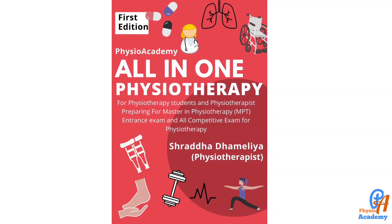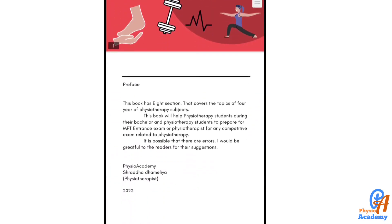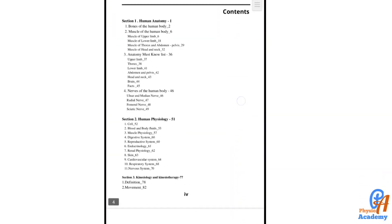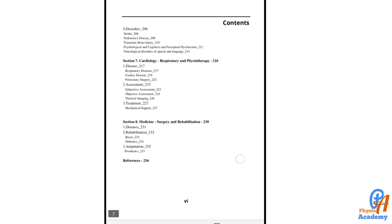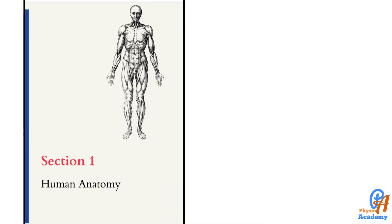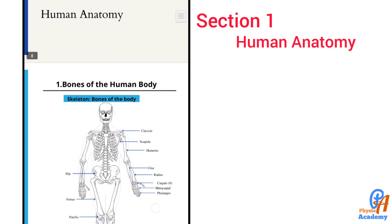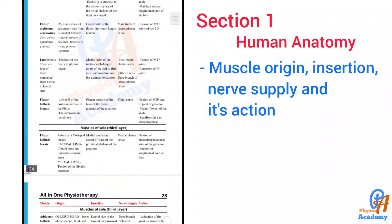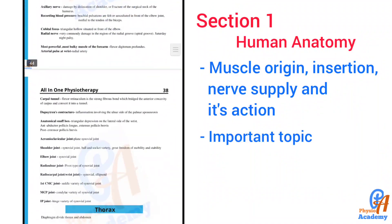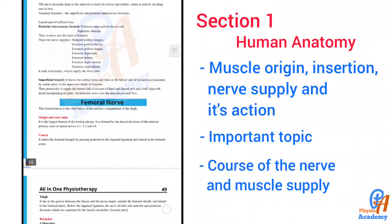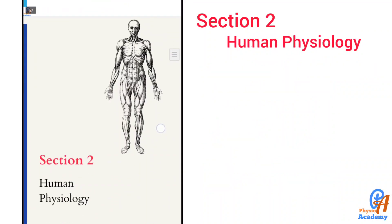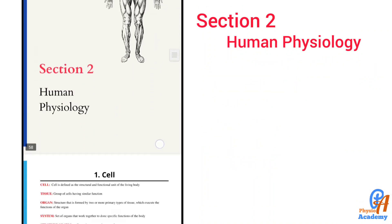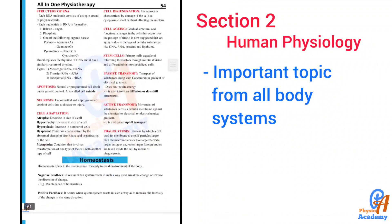This is an all-in-one physiotherapy book for MPT entrance and all competitive exams. The book contains seven sections that cover most topics from the four years of the bachelor in physiotherapy course. Section one contains anatomy, including muscle origin, insertion, nerve supply, and action, as well as important topics on the course of nerves and muscle supply. Section two is for physiology, covering important topics from all body systems.